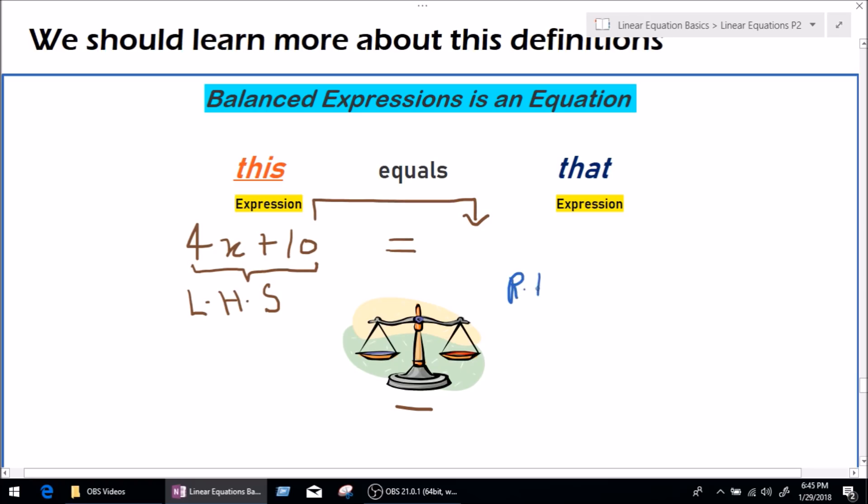I think we can balance it by writing another expression on the right hand side. So, as we can see, right hand side, nothing has been written to balance the expression on the left hand side. So, what do we do now? Let me write an expression. 8x plus, let me take 60. Okay, so as we can see, this equals that. Our this is expression 4x plus 10, and the equals is equal to, and our that expression is 8x plus 60.